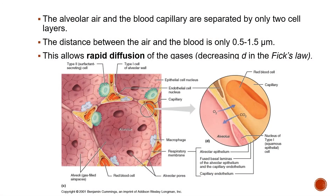The alveolar air and the blood capillaries are separated by only two cell layers. The distance between the air and the blood is about 0.5 to 1.5 micrometers. This short distance allows rapid diffusion of gases — lower distance means higher rate of diffusion.